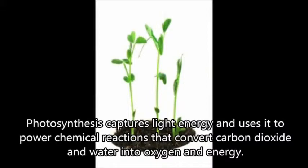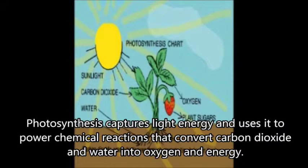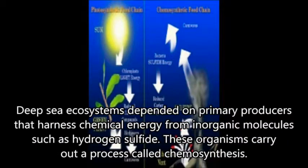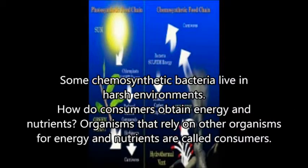Photosynthesis captures life's energy and uses it to power chemical reactions that convert carbon dioxide and water into oxygen. Deep-sea ecosystems depend on primary producers that harness chemical energy from inorganic molecules, such as hydrogen sulfide. These organisms carry out a process called chemosynthesis, in which chemical energy is used to produce carbohydrates. Some chemosynthesis bacteria live in harsh environments.